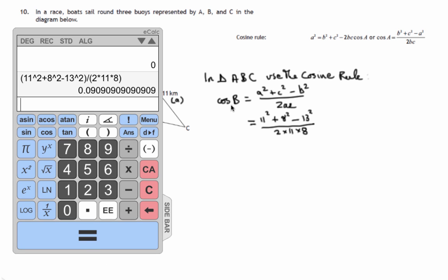So there's the value that I get, and that's the cosine of B. So cosine of B is equal to 0.0909, etc.